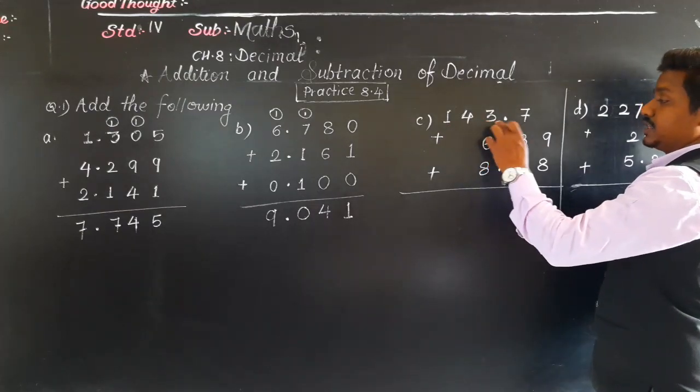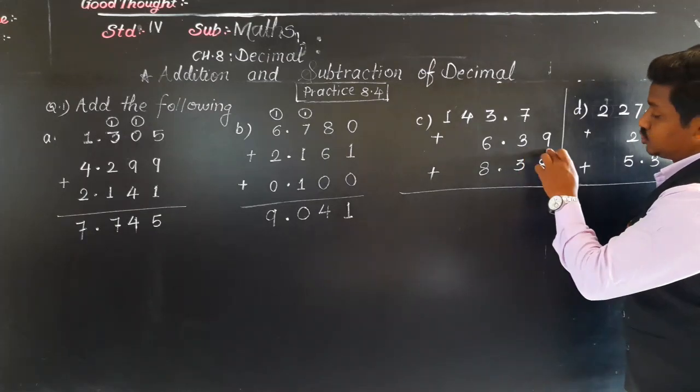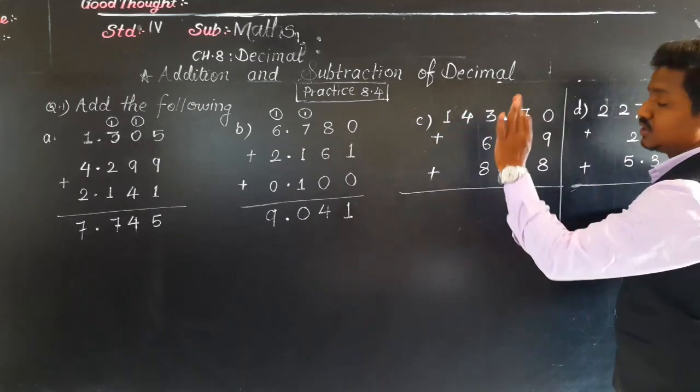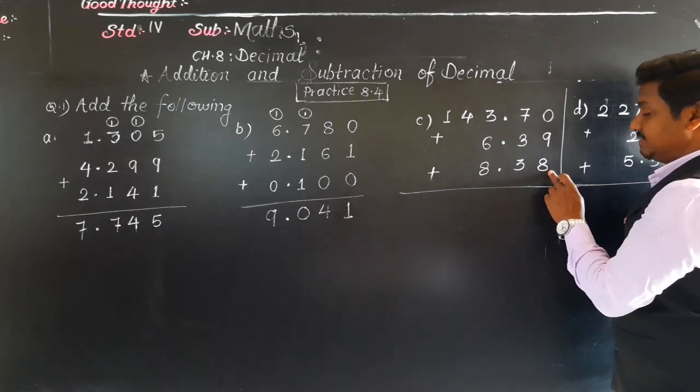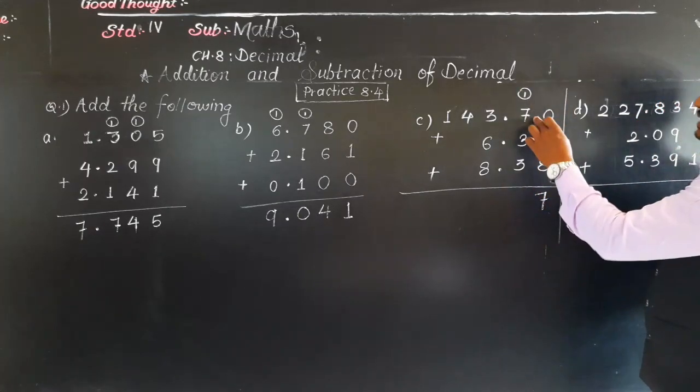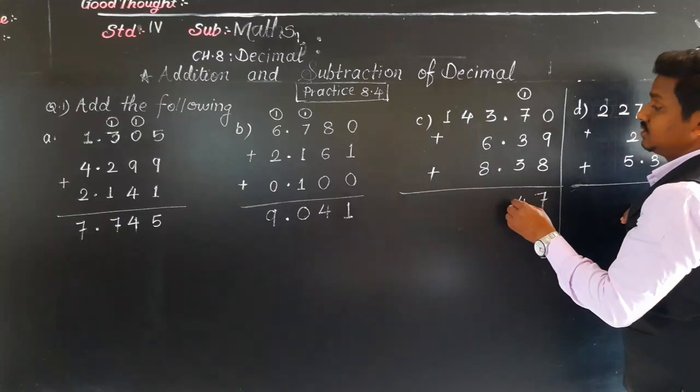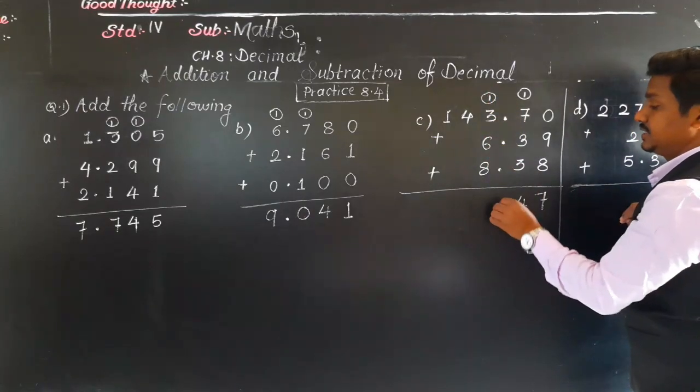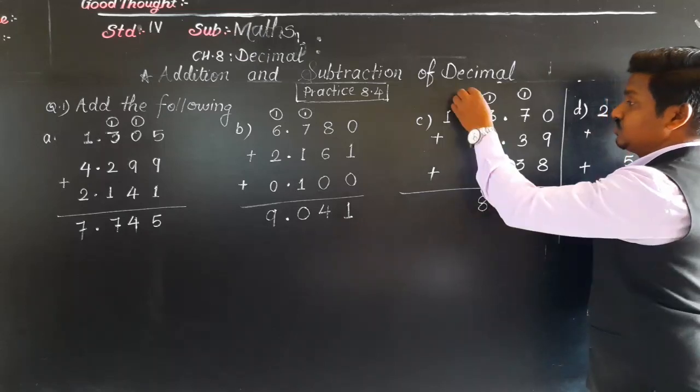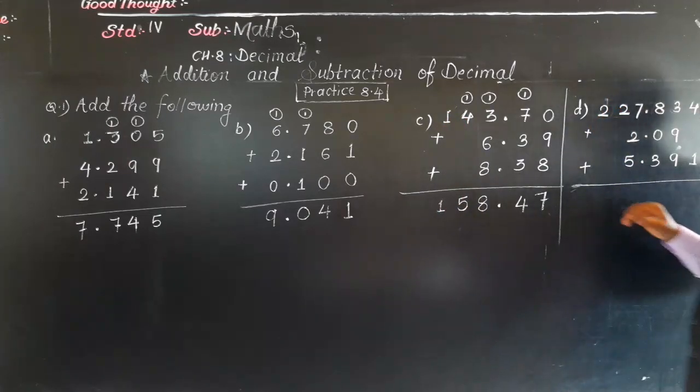Next: 43.7 plus 6.39 plus 8.38. Here see, 2 decimal places are there, also 2 decimal places, here only 1 decimal place. So put 1 zero here. This side not needed to put. 9 plus 8 is 17, 7 plus 0 is 17 itself. So 7 will come down, 1 will be carried. 7 plus 3 is 10, 10 plus 3 is 13, 13 plus 1 is 14. 4 will come down, 1 will be carried in the whole number part. Here, decimal point. Then 6 plus 3 is 9, 9 and 1 carried is 10, and 8 is 18. Correct? 8 will come down, 1 will be carried. Here see, only 4 is there. 4 plus 1 is 5, and here 1. So 158.47.